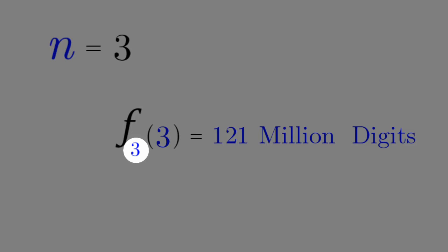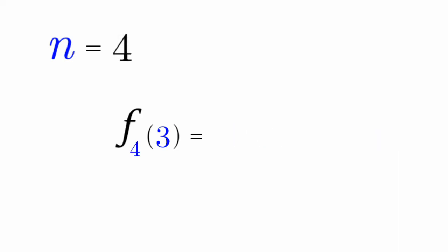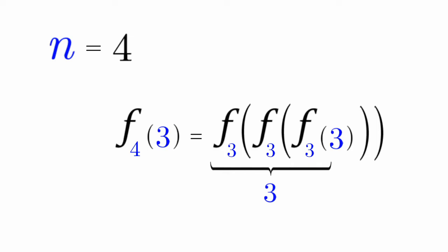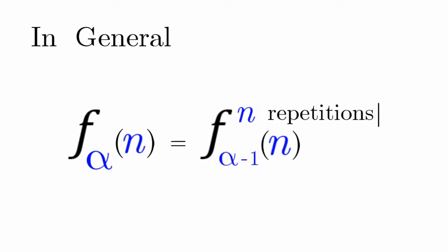But we're only in the third level. If we do f sub 4 of 3, that's going to be the f sub 3 process 3 times. In general, we can say that f sub alpha of n is equal to f sub alpha minus 1 of n, repeated n times.